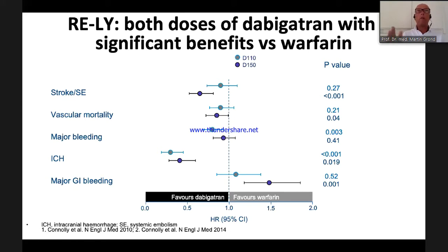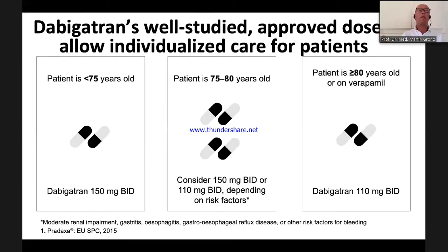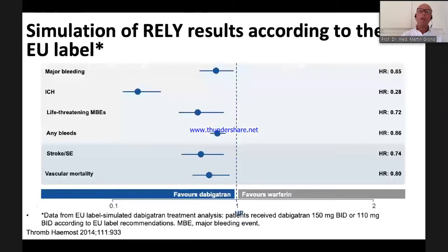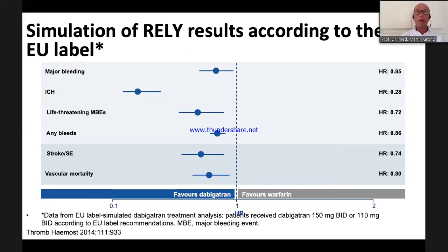Based on the EU label: if the patient is below 75, give 150 mg; if the patient is between 75 and 80 years — as in my patient — you can choose between 150 and 110 mg; if the patient is above 80, you should use dabigatran 110 mg. Researchers re-analyzed the RE-LY data using the labeled dose rather than the randomized dose. This showed that the EU labeling produces advantages in major bleeding, ICH, life-threatening bleeding, any bleed, and also efficacy regarding stroke and vascular mortality.